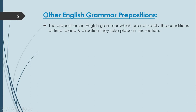The prepositions in English grammar which do not satisfy the condition of time, place, and directions — these are the prepositions which are not time, place, or direction prepositions. These are the prepositions we discussed in part number 1 and part number 2: prepositions of time, prepositions of place, prepositions of direction, with their examples. So other prepositions in English grammar — all these kinds of preposition words in grammar are covered in the following prepositions.